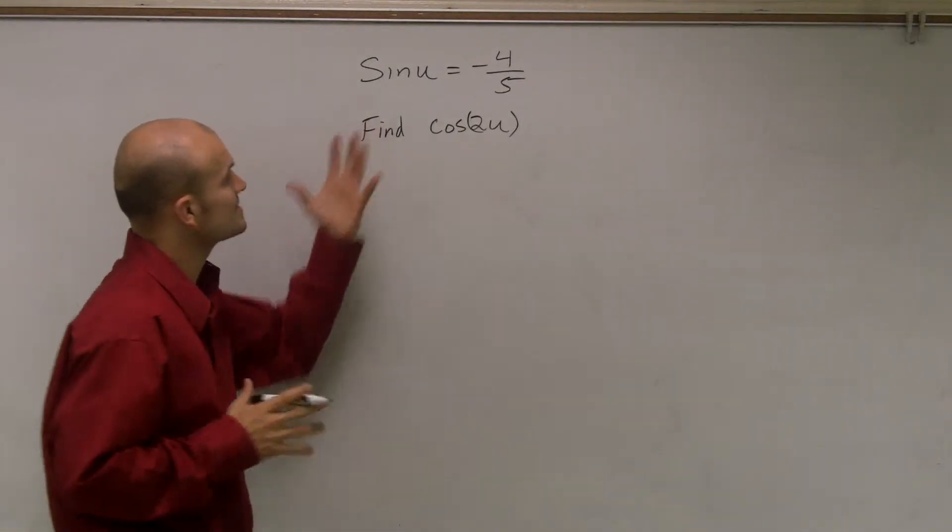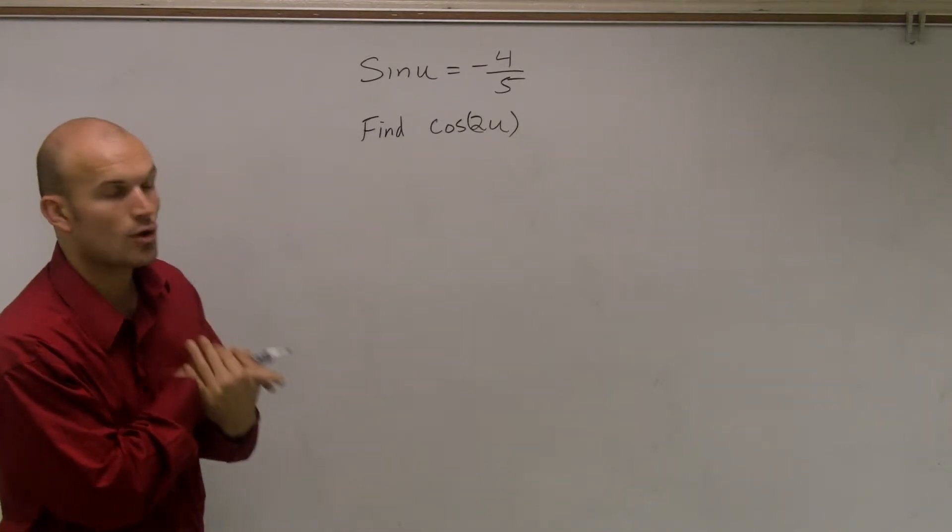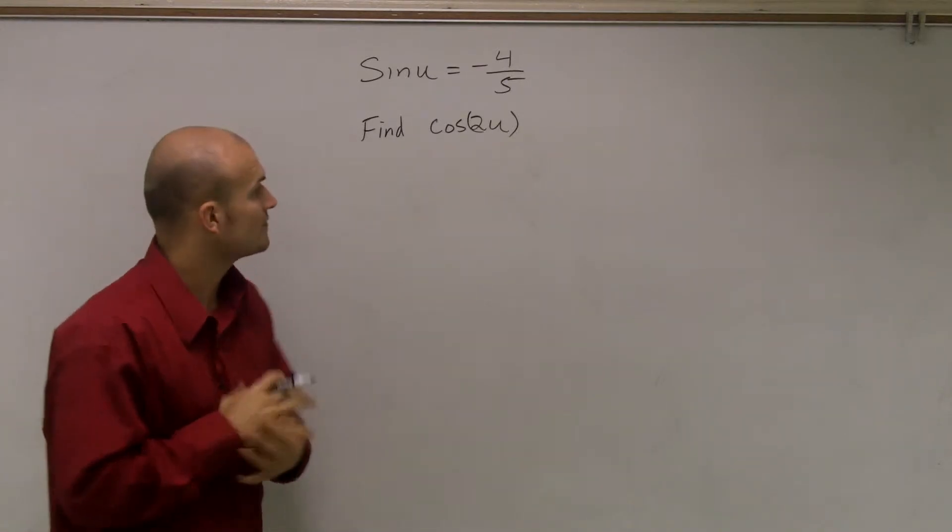All right. So for this problem, given the value sine of u equals negative 4 over 5, find the value of cosine of 2u.